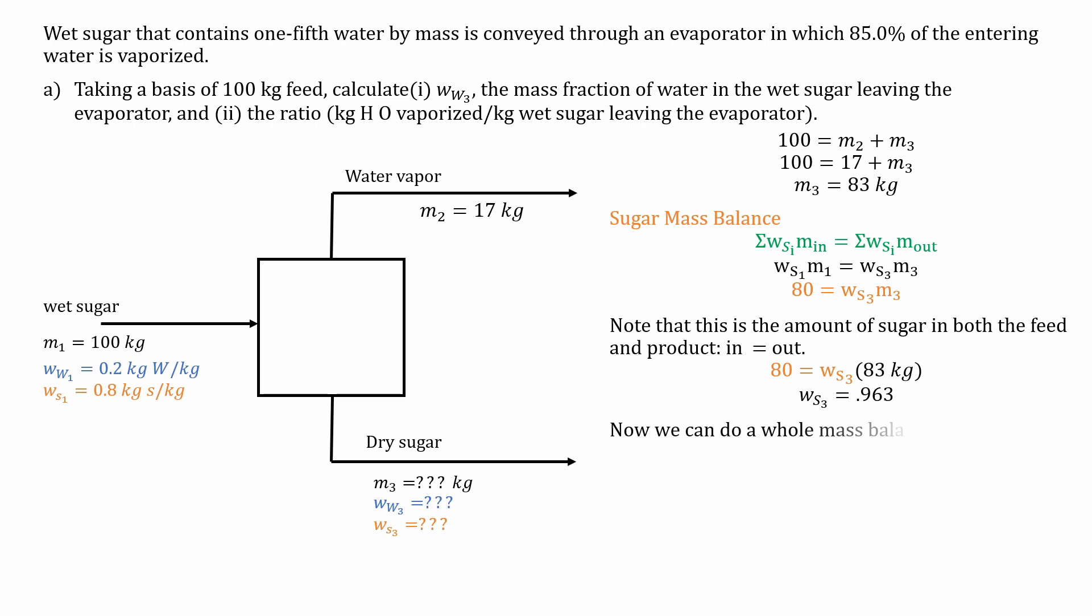We can do a whole other mass balance on water, or just recall the definition of mass fraction. So we can just subtract 1 from this answer to about 3.6%. Now we have to answer the question by taking the ratio of the kg of water vaporized with respect to kg of wet sugar leaving the system, which is going to be mass 2 or mass 3. This gives us an answer of about 0.204. These are our answers.